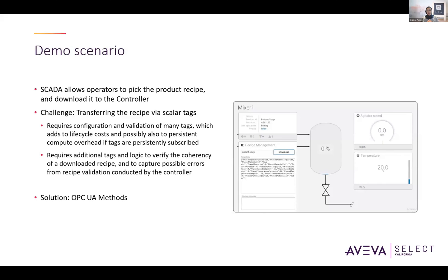Additionally, breaking the recipe into many tags causes a loss of coherency — a loss that may require extra application logic to mitigate. If the controller is able to validate recipes, there may still be a need to configure and validate additional tags to pass and capture the validation results from the controller to SCADA. OPC UA methods can help by maintaining the integrity of the recipe and passing it to the controller as a single atomic transaction — sending the whole recipe to the controller using this method and returning the result of recipe validation by the controller.